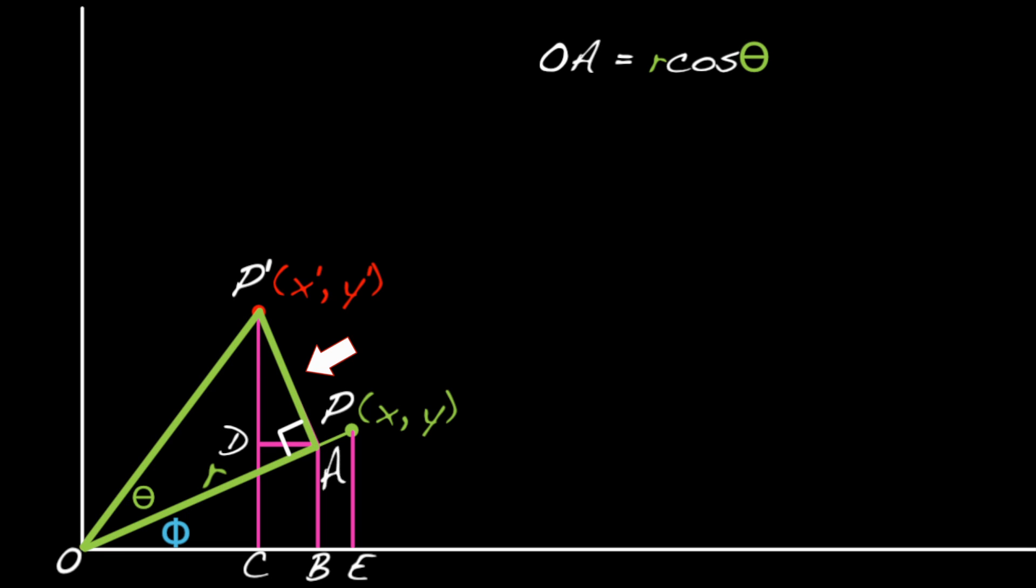First notice that OPA is a right triangle, so we can use sine and cosine. OA is the side adjacent to theta, meaning that OA equals r cosine theta.